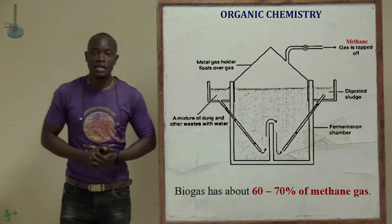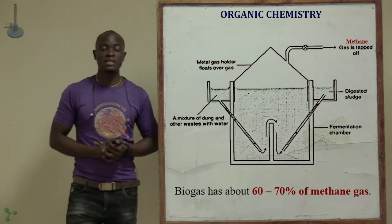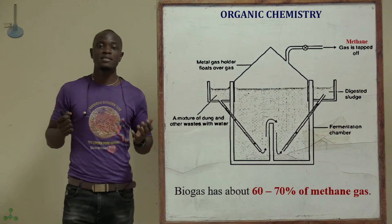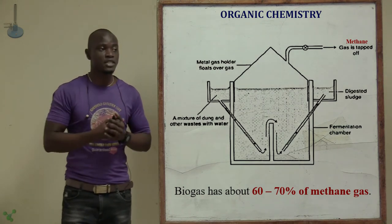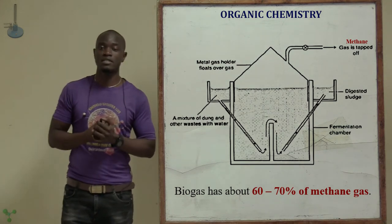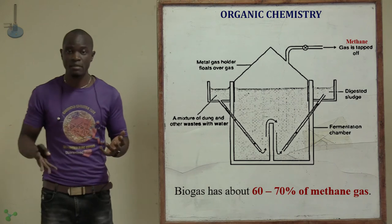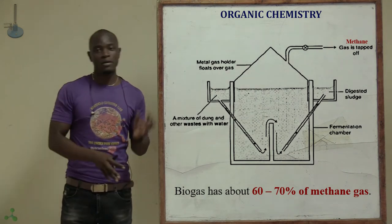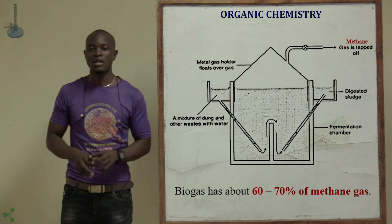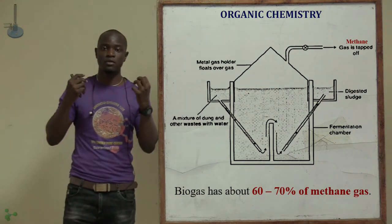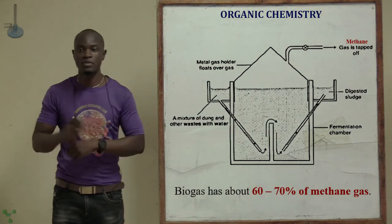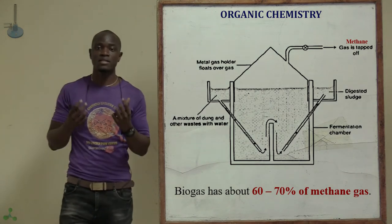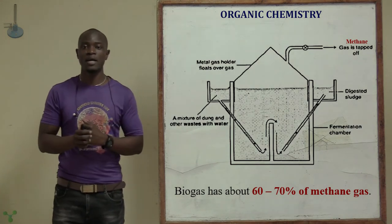This diagram summarizes how biogas is formed at home. The biogas chamber, or fermenting chamber, is mainly dug underground. The organic products are thrown inside for the bacteria to feed on in order to produce the biogas.